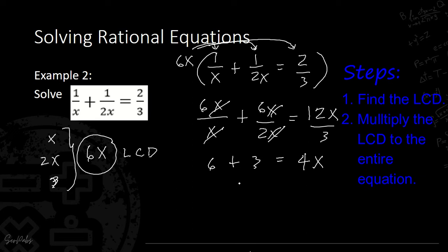Simplifying: 6 plus 3 equals 9, and the right side is 4x. Using transposition, we get negative 4x equals negative 9. Then dividing both sides by negative 4, the negatives cancel, giving us x equals 9 over 4. This is an improper fraction, so we convert it to a mixed number.